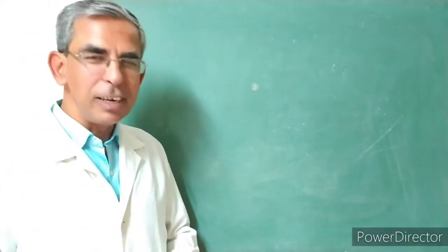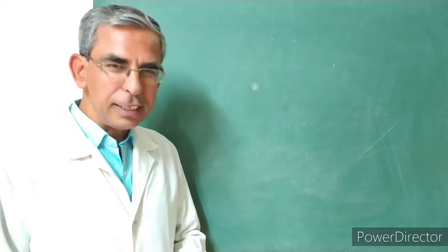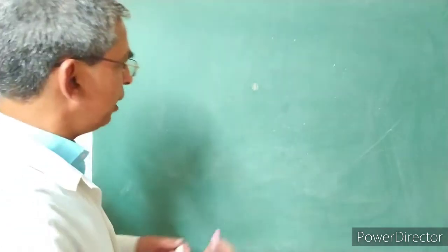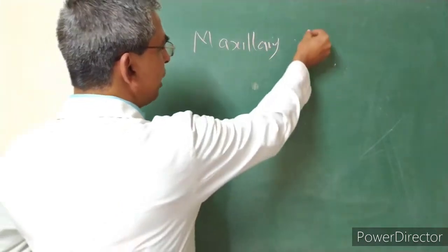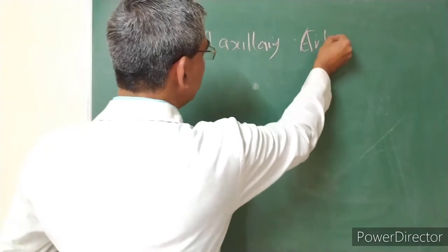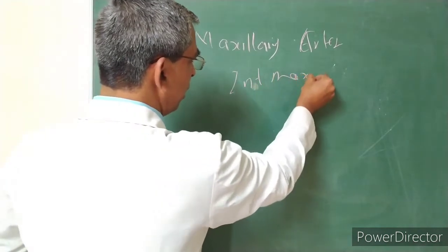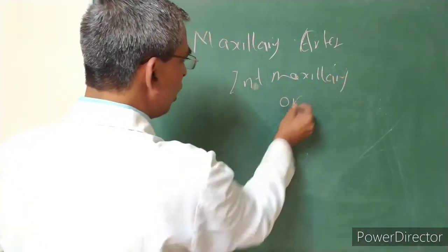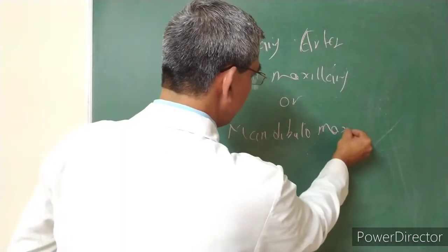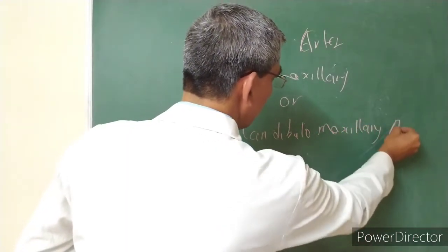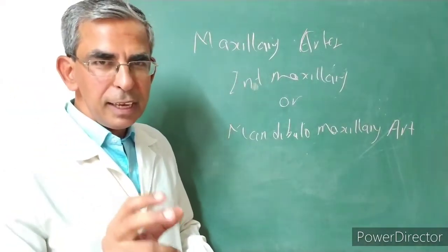Today we will discuss the maxillary artery, one of the important vascular contents of the infratemporal fossa. The maxillary artery is a branch of the external carotid artery and is also known as the internal maxillary artery or mandibular maxillary artery. It is one of the two terminal branches of the external carotid artery.